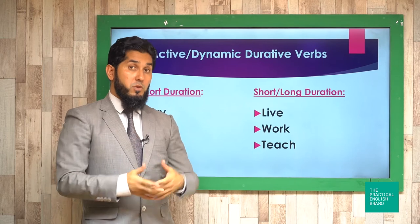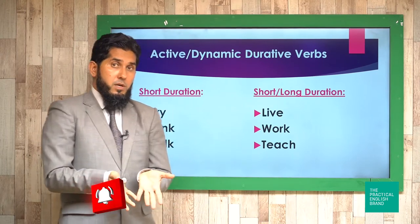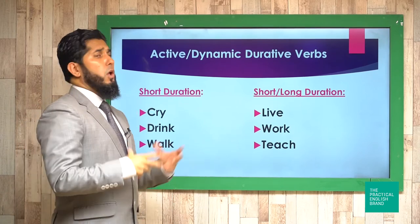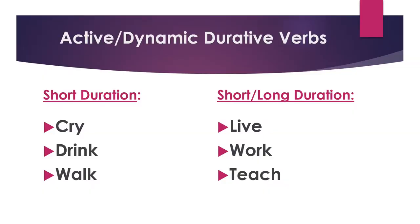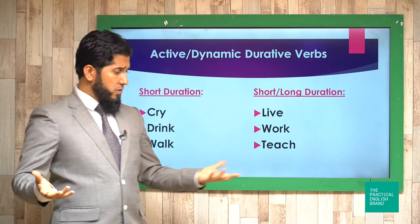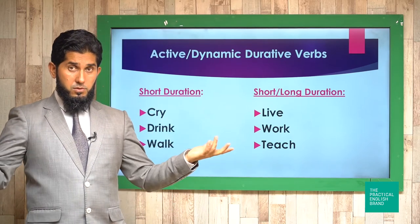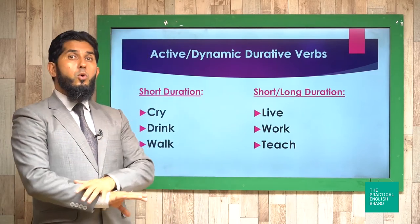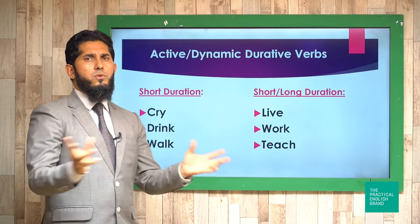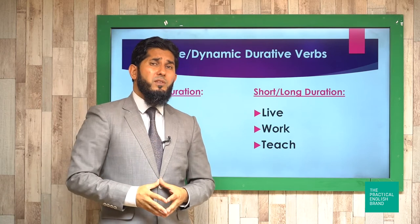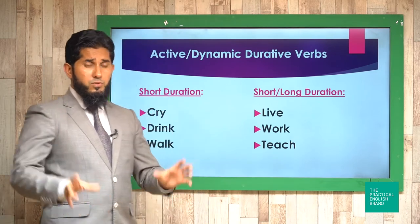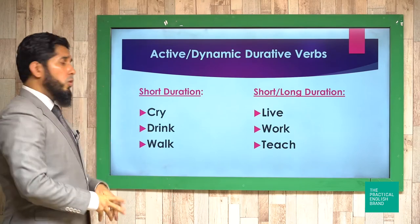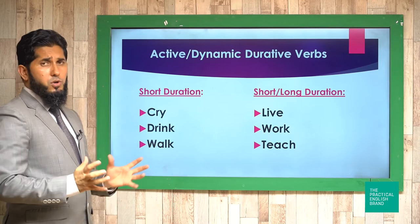The second group of durative action verbs can be used with both short and long duration. For example: 'I've been living in Kabul for 10 years' or 'I've been living here for a few days' — both work. Similarly, 'I've been working for a few minutes' or 'I've been working for many years' — both are fine. 'I've been teaching this class for a few minutes' or 'for many years' — both are possible. These verbs accept both short and long durations naturally.